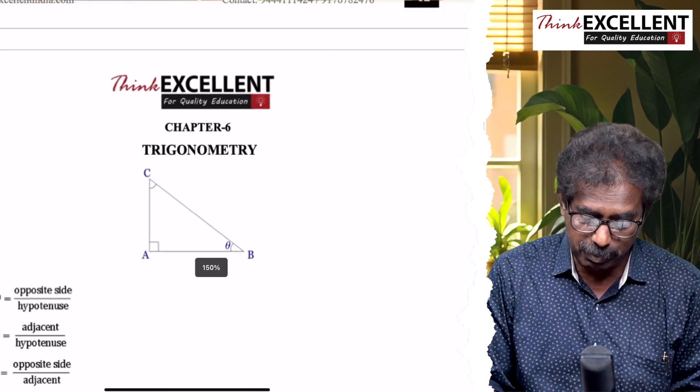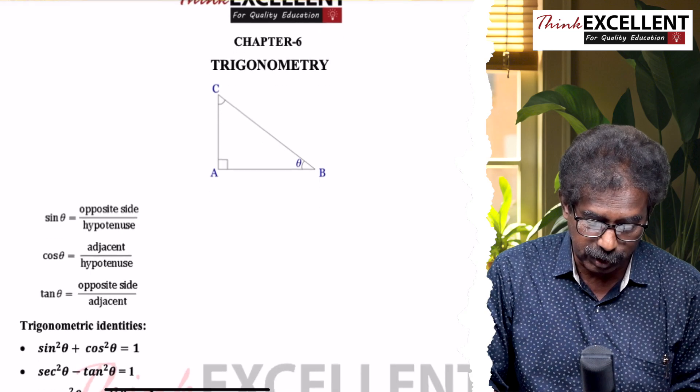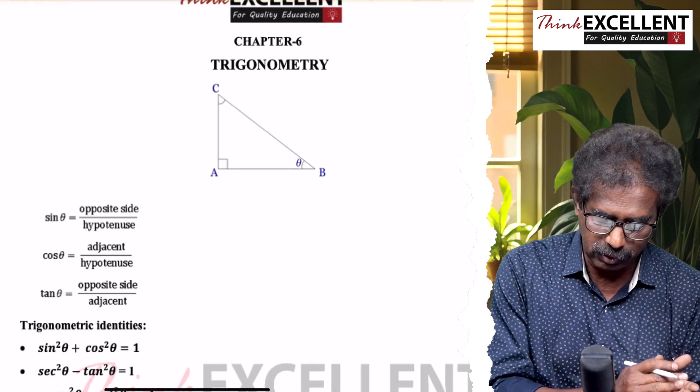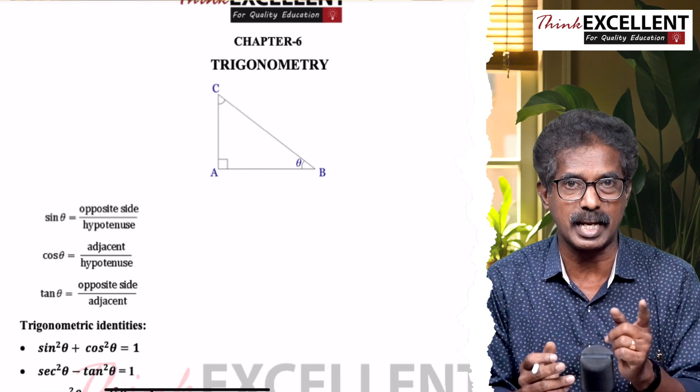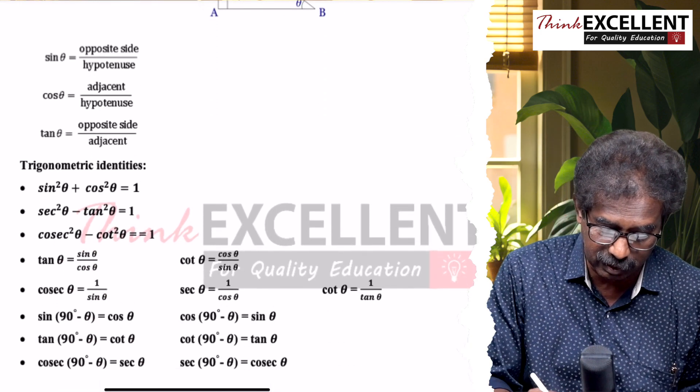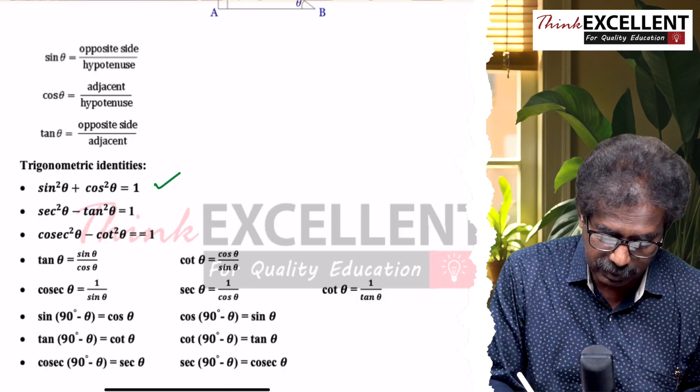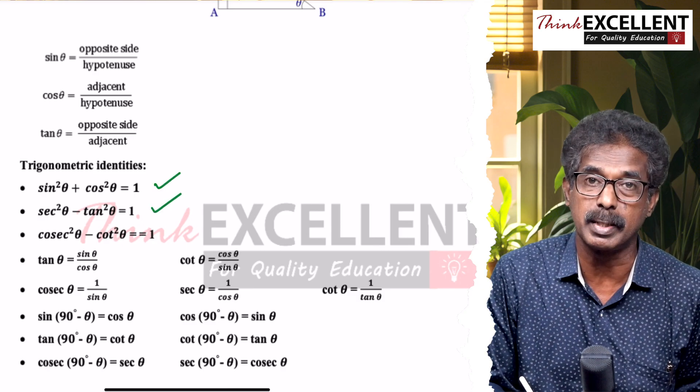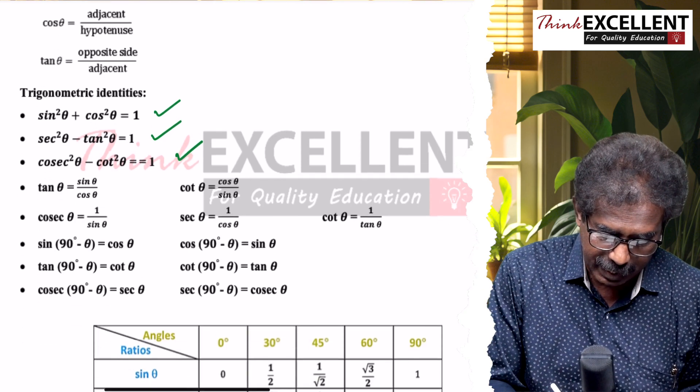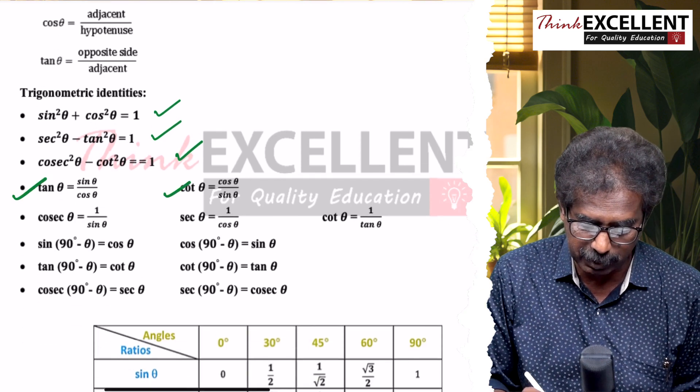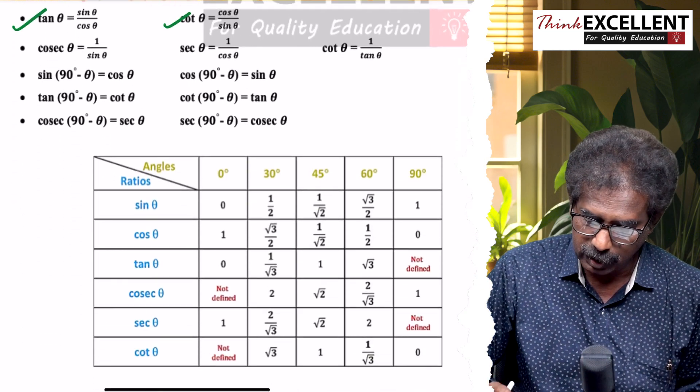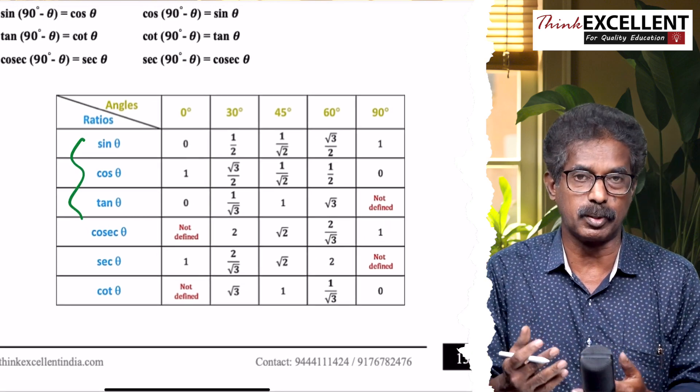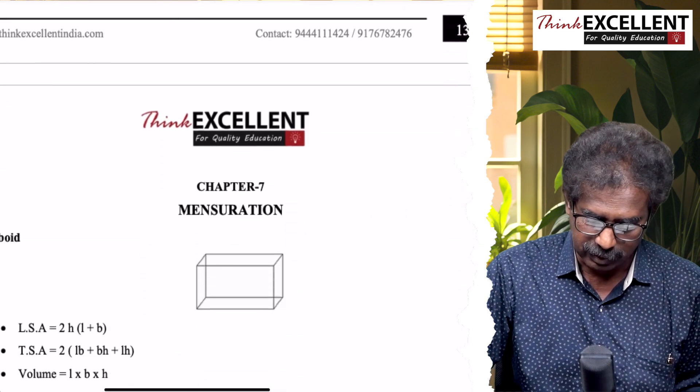Chapter number 6, Trigonometry. First, trigonometric ratios: sin θ, cos θ, tan θ. Sin is opposite by hypotenuse, cos is adjacent by hypotenuse, tan θ is opposite by adjacent. Trigonometric identities: sin²θ + cos²θ = 1, sec²θ − tan²θ = 1, cosec²θ − cot²θ = 1. Then tan θ = sin/cos, cot θ = cos/sin. All these results you go through. The table, practice. If you know first three, remaining all are reciprocals. Easy, you know, you get it there.